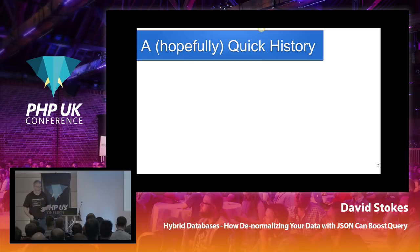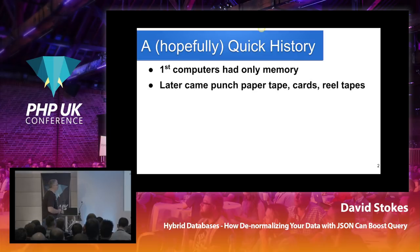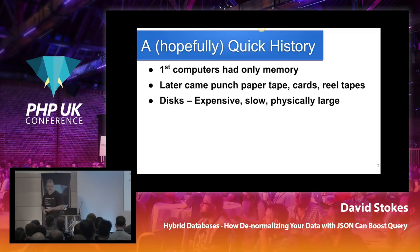For those of you without grey hair or not prematurely bald, the first computers — we're talking about electronic computers, not the people who actually did computations and linear algebra — had only memory. Later came punch cards, paper tapes, real tapes, and all the other fun bits. They're long, long, long gone. And disk drives, if you could find them, were rather expensive, very slow, and physically very, very large.